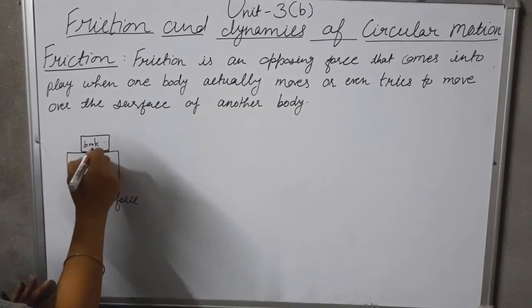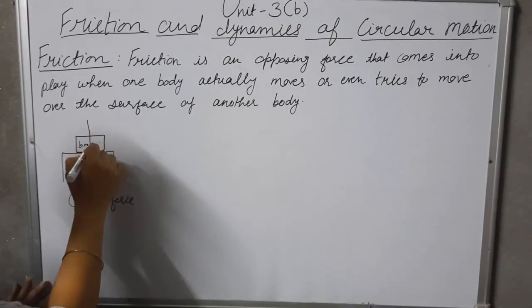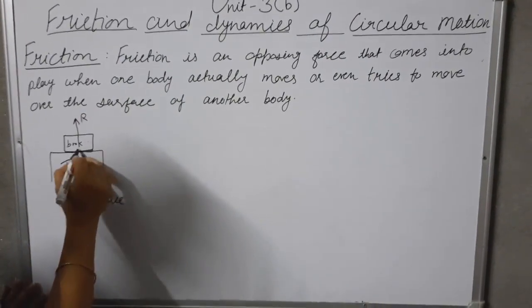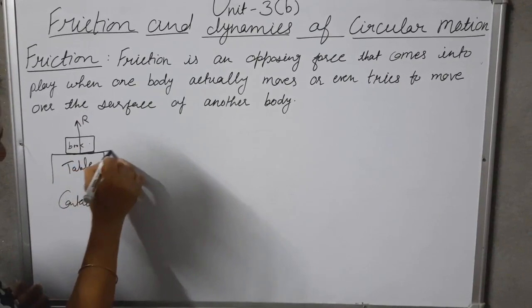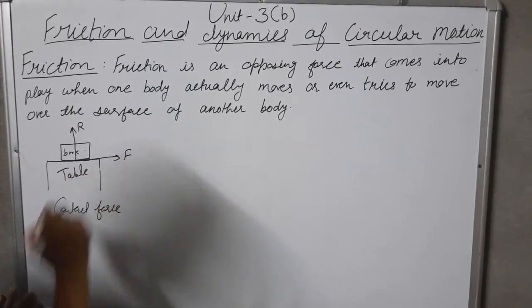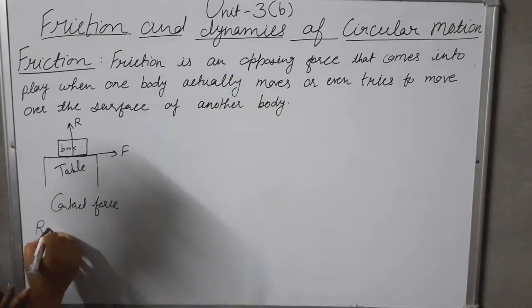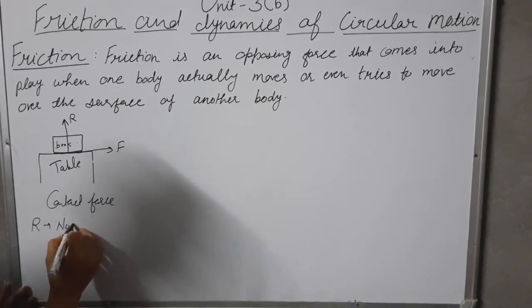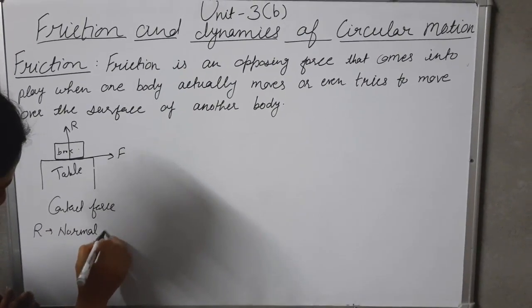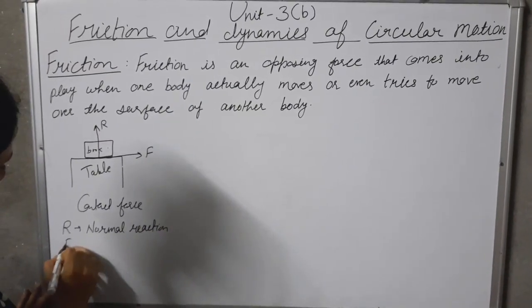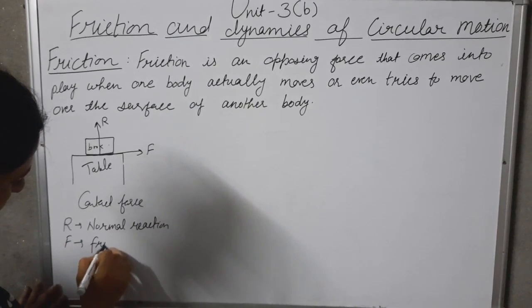Now the perpendicular component of contact force is called normal reaction, and the parallel component of this contact force is called force of friction. So this R is normal reaction and this F is frictional force.